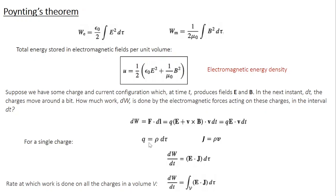Charge can be represented in terms of charge density as rho d tau. Similarly, the current density J equals rho multiplied by velocity V. So in the expression for Q I can write rho d tau, and V can be substituted by J over rho, so rho and rho cancel. You get dW equal to E dot J dT d tau, or dW by dt equal to E dot J d tau. This is the rate of work done on a single charge. To calculate the rate of work done on all charges inside the volume V, simply take the volume integral: dW by dt equals the volume integral of E dot J d tau.